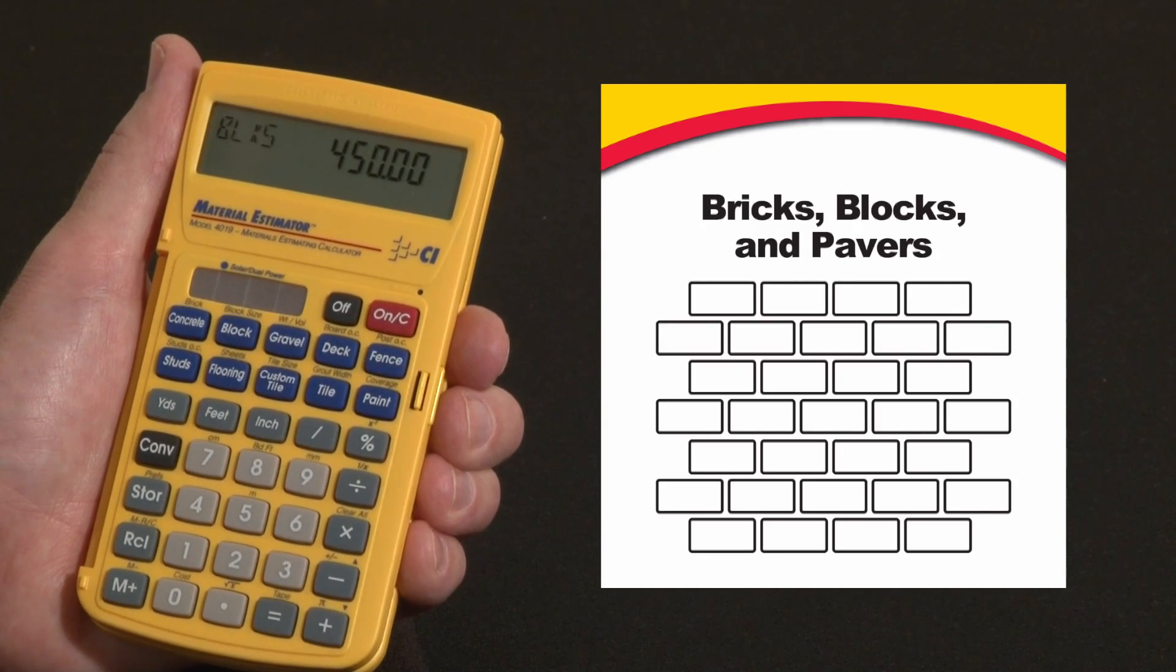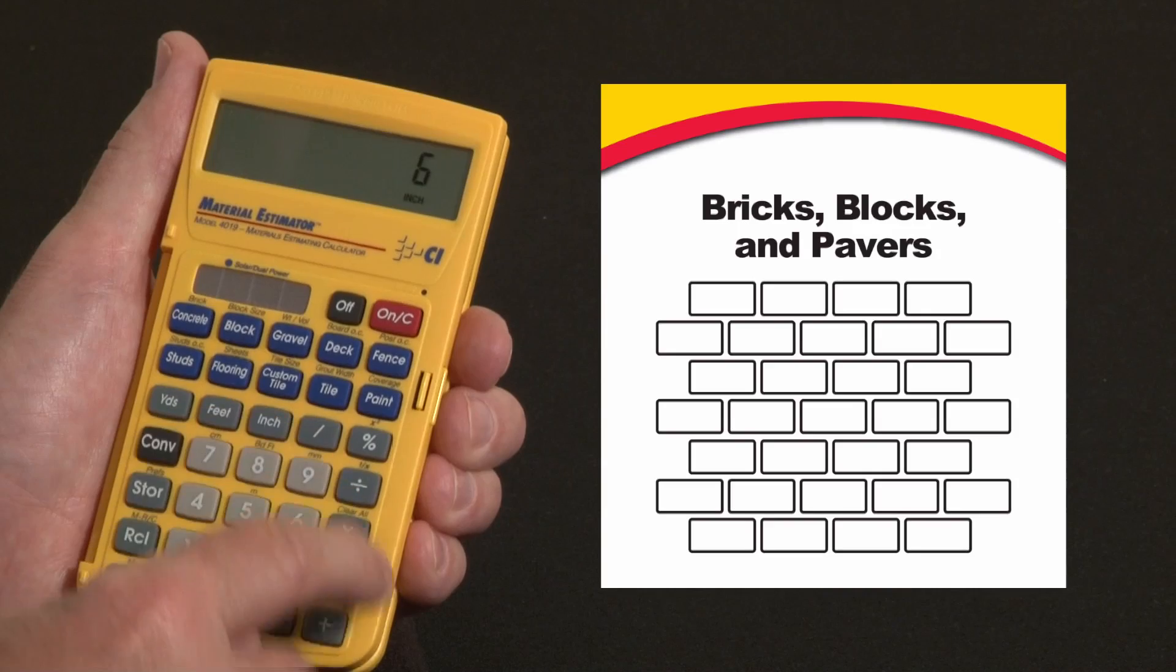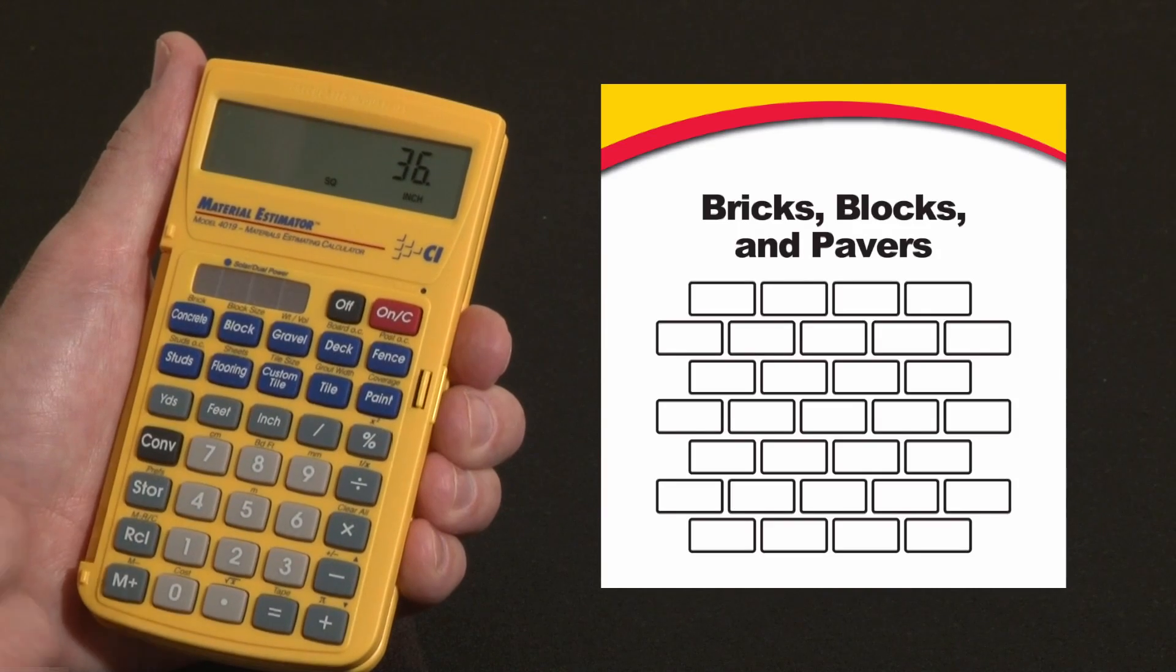If you have pavers for a driveway or something, 6x6 pavers, same thing, 6 inch by 6 inch, 36 square inches each.